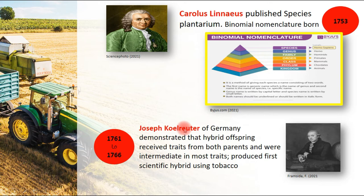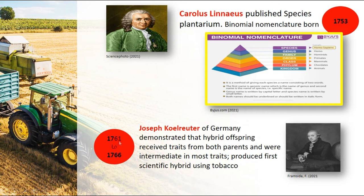Josef Kölreuter, from Germany, demonstrated that hybrid offspring received traits from both parents and were intermediate in most traits. He also, from 1761 to 1766, produced the first scientific hybrid using tobacco.